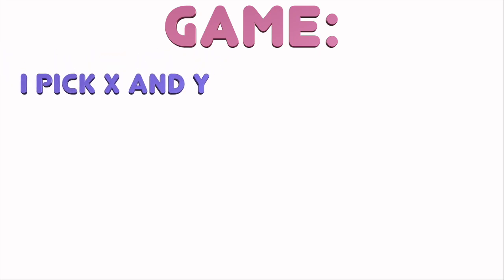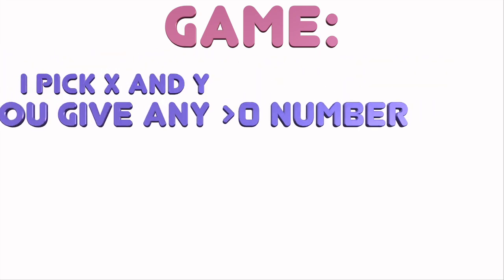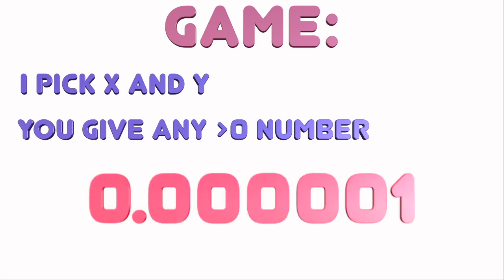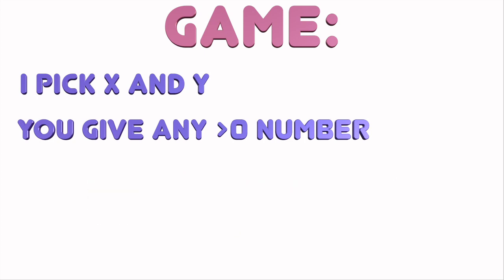Let's play a game. I pick two numbers, x and y, which I keep in secret from you. You then give me any strictly positive number, like 2 or pi or 1 or million. Let's denote this number as z.